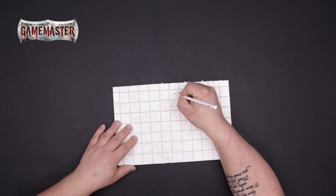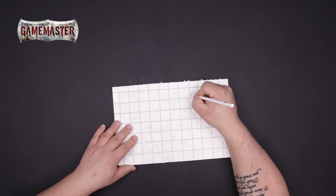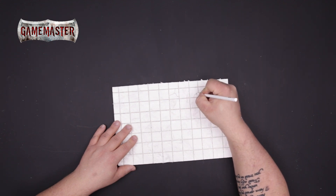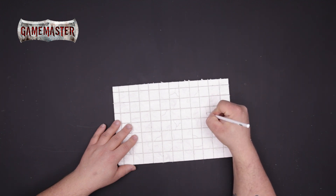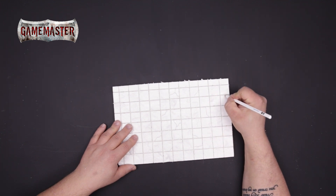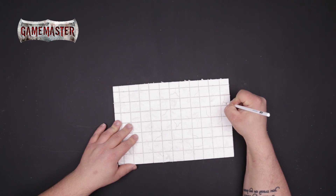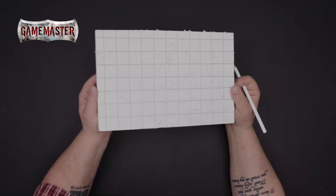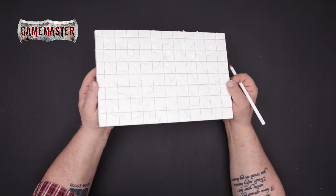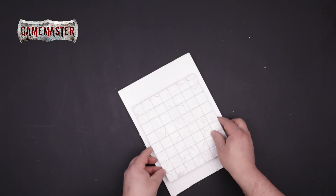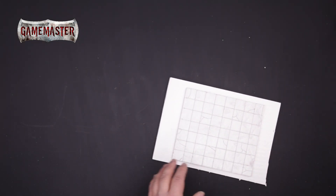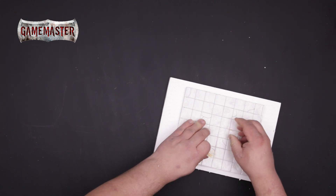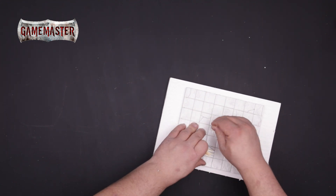If you'd like to further weather your tiles, using a graphite pencil you can draw cracks in the stone to give it a simple aged effect. Using cocktail sticks and a fresh piece of foam, you'll secure the tiles to the foam. The toothpick acts as reinforcement and will help keep the two pieces stable.